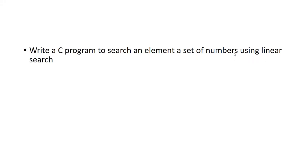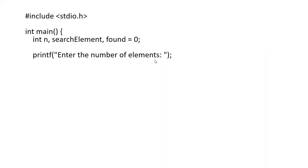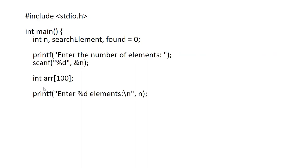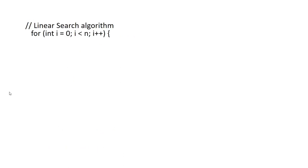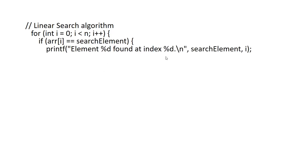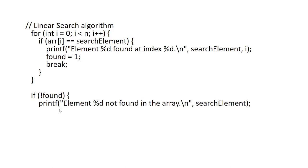Write a C program to search an element in a set of numbers using linear search. Print 'enter number of elements' and scan n. Print 'enter elements in the array' and scan each a[i] in a for loop. Enter the element to be searched and store it in 'search_element'. For the linear search: for i=0; i<n; i++, if a[i] equals search_element, print 'element found at index i', set found=1, and break. End for. If not found, print 'element not in the array'. Return 0 and close main.